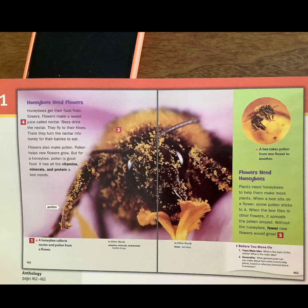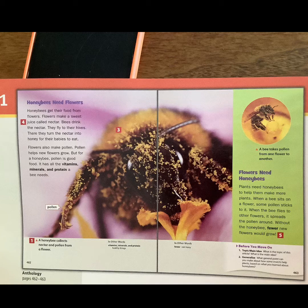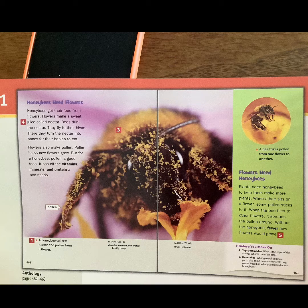Topic and main idea: what is the topic of this article, and what is the main idea? We're talking about the relationship between honeybees and flowers. The main idea is how they help each other out — what they do to help the other one survive. They can't do those jobs on their own; they actually need each other. Generalize: what general point can you make about how some insects help plants, based on what you learned about honeybees? Find somebody in the room or hit pause and talk through what you've learned about plants, bees, and how they help each other.